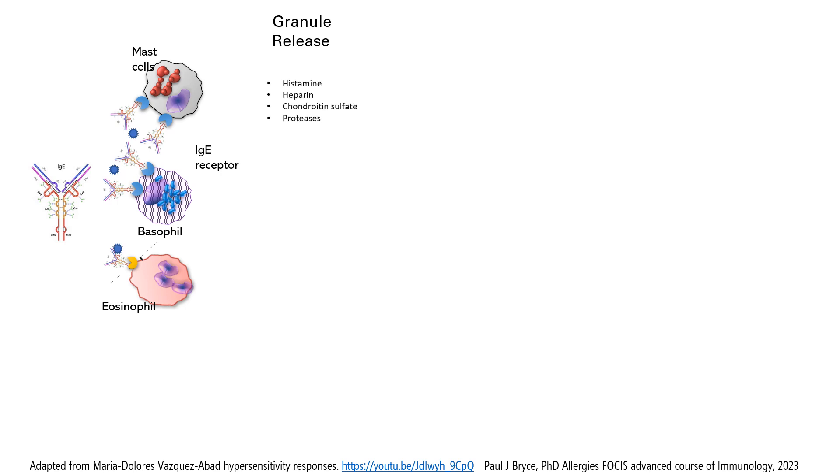Well the mast cell will have histamine, heparin, chondroitin sulfate, proteases. The basophil has histamine, chondroitin sulfate, several proteases.